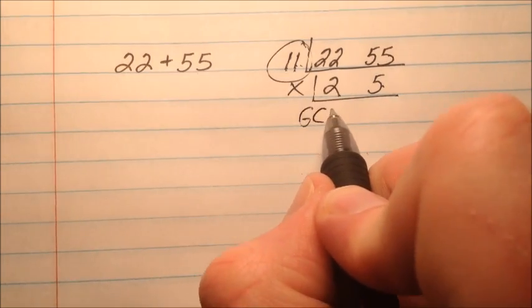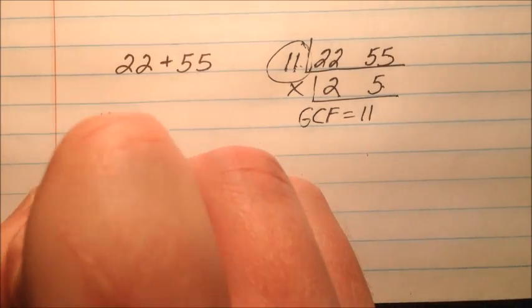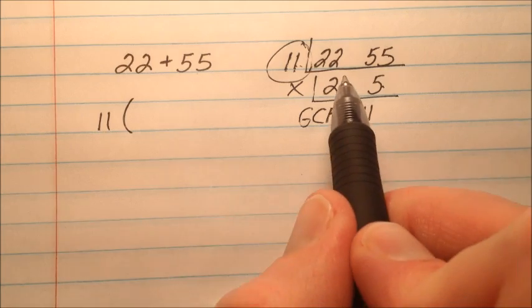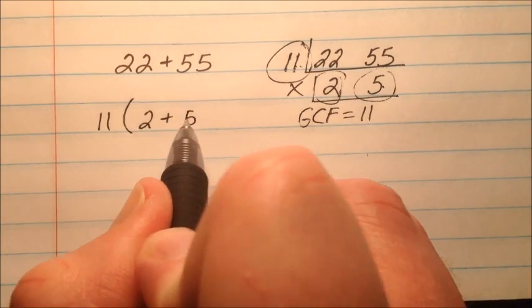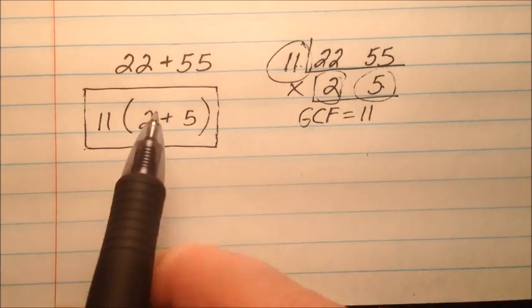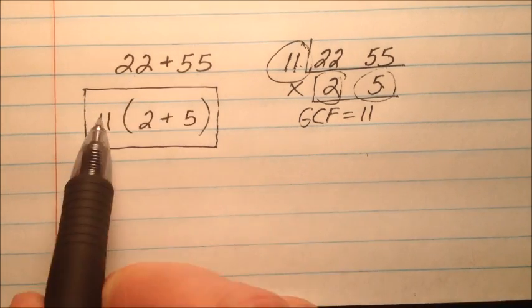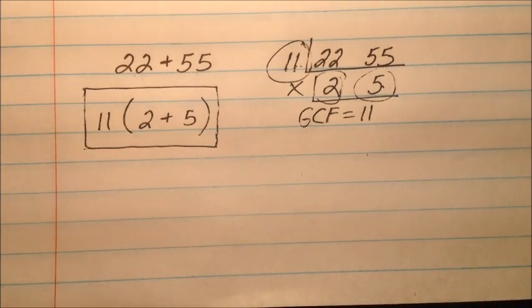So we're going to say the greatest common factor is 11. So that 11 is going to come out front here and my leftovers 2 and 5 will go in these parentheses. Again, the idea of these problems is we're factoring, finding the greatest common factor, we're factoring that out and we're putting the leftovers in here as an addition problem. So ultimately, it looks like the distributive property.